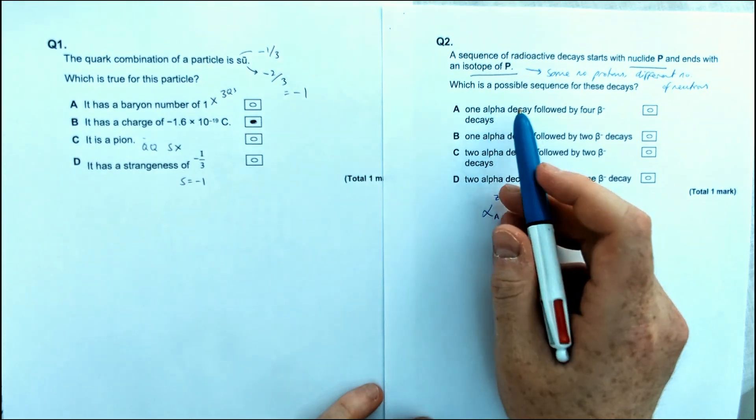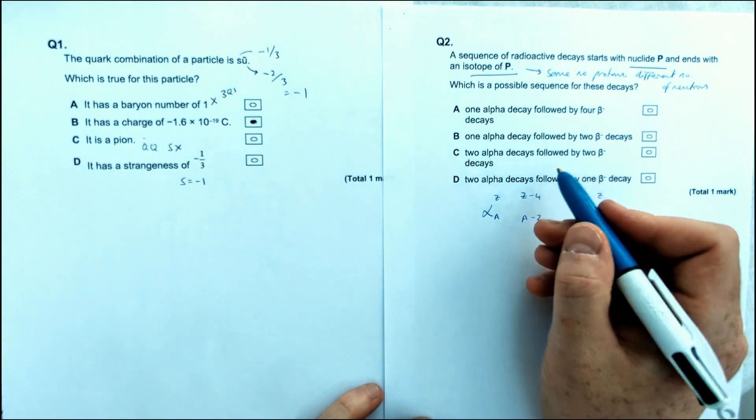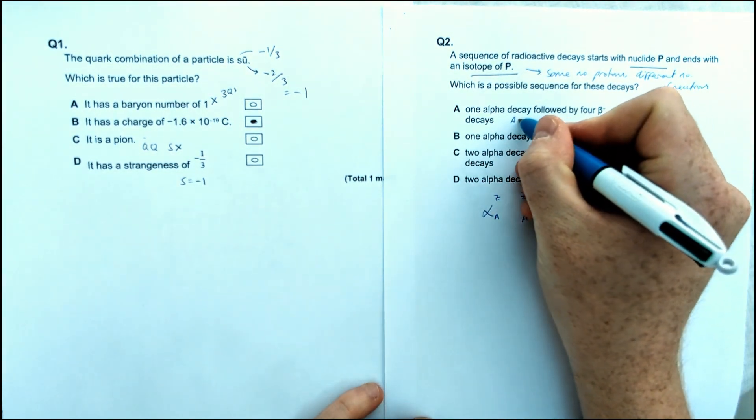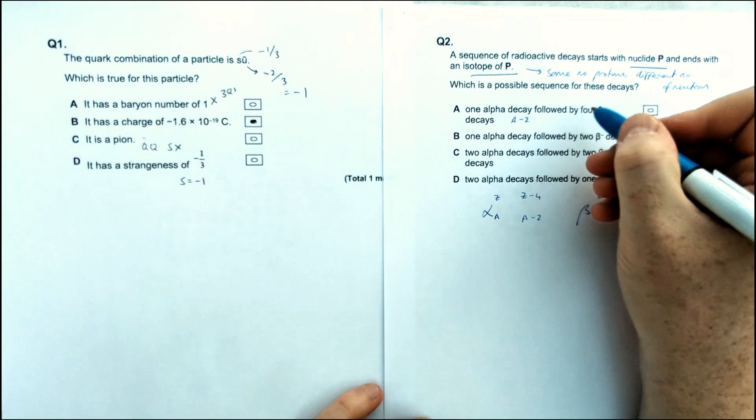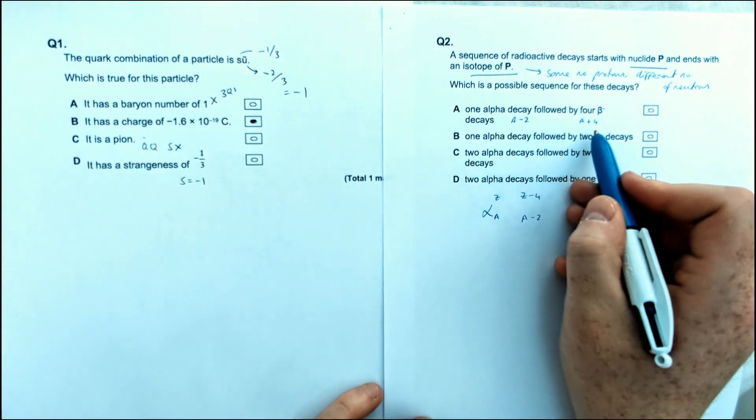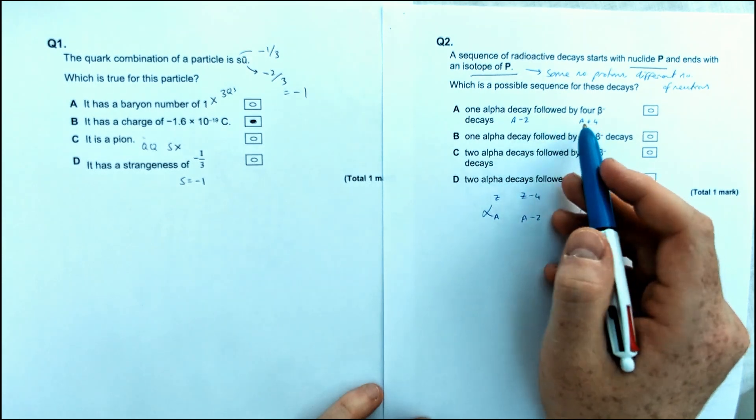So therefore, let's have a look at each one. Alpha particle decay followed by 4 beta pluses. So 1 alpha means we've got A is going to be minus 2. And then 4 beta pluses means A is plus 4. So that's not going to be the same element because there's different atomic numbers or different proton numbers.